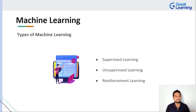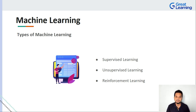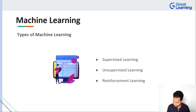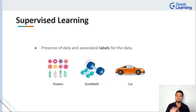There are various types of machine learning. The three most fundamental types are supervised learning, unsupervised learning, and reinforcement learning. These are the most fundamental aspects of machine learning that you must know about.